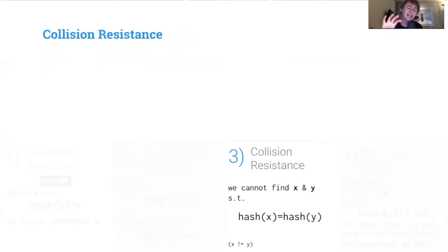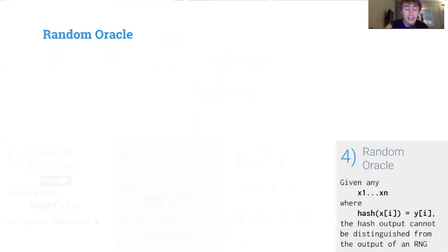Now, collision resistance is a general form of the second pre-image resistance. Basically, it says you can't find two different values which hash to the same thing, no matter what those values are. If you're given this file, these ones and zeros, you'll never find x and y such that hash of x equals hash of y. It won't happen unless you basically run your computing hardware to the end of the universe.